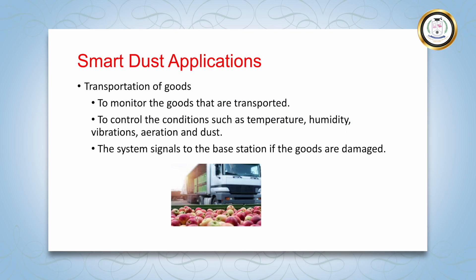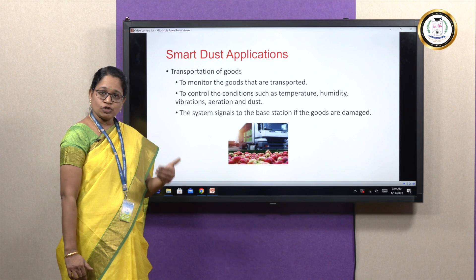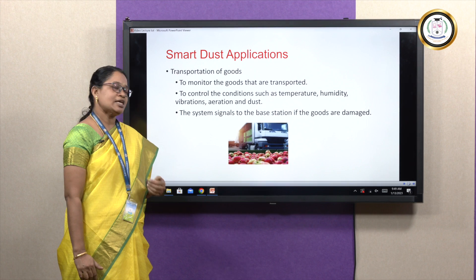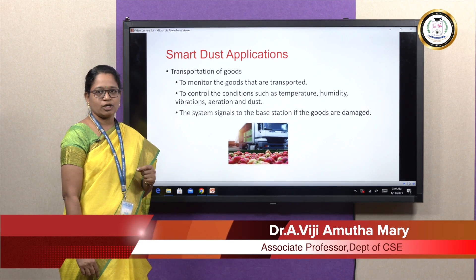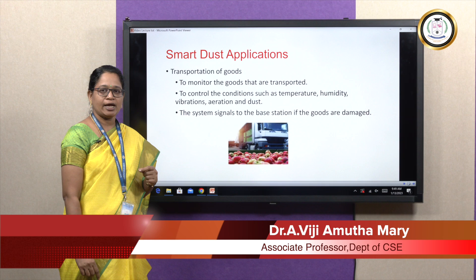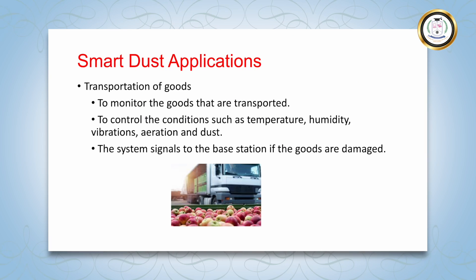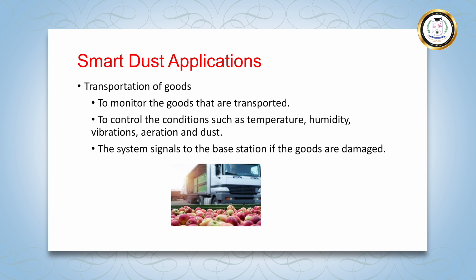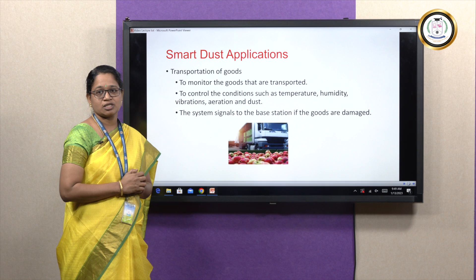SmartDust is also used in the transportation of perishable goods. The goods can be monitored continuously when they are being transported. Certain conditions such as temperature, humidity, aeration, and dust can be controlled. The system also signals immediately to the base station if the goods are being damaged. These are the applications of SmartDust.